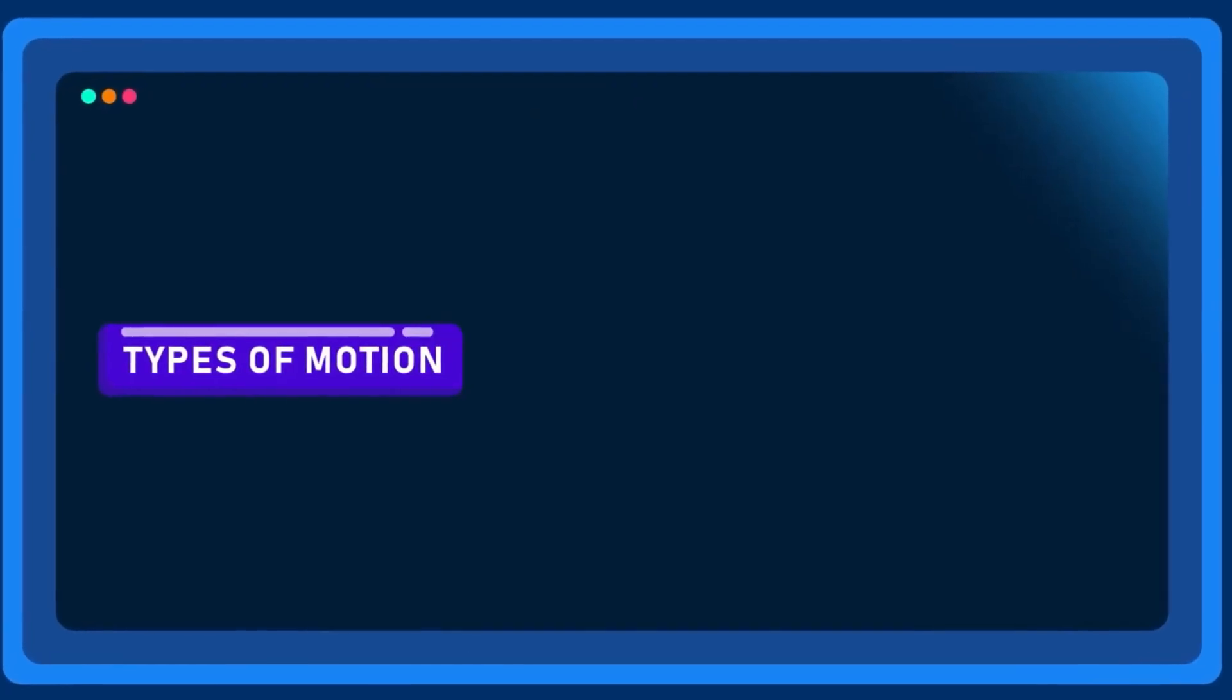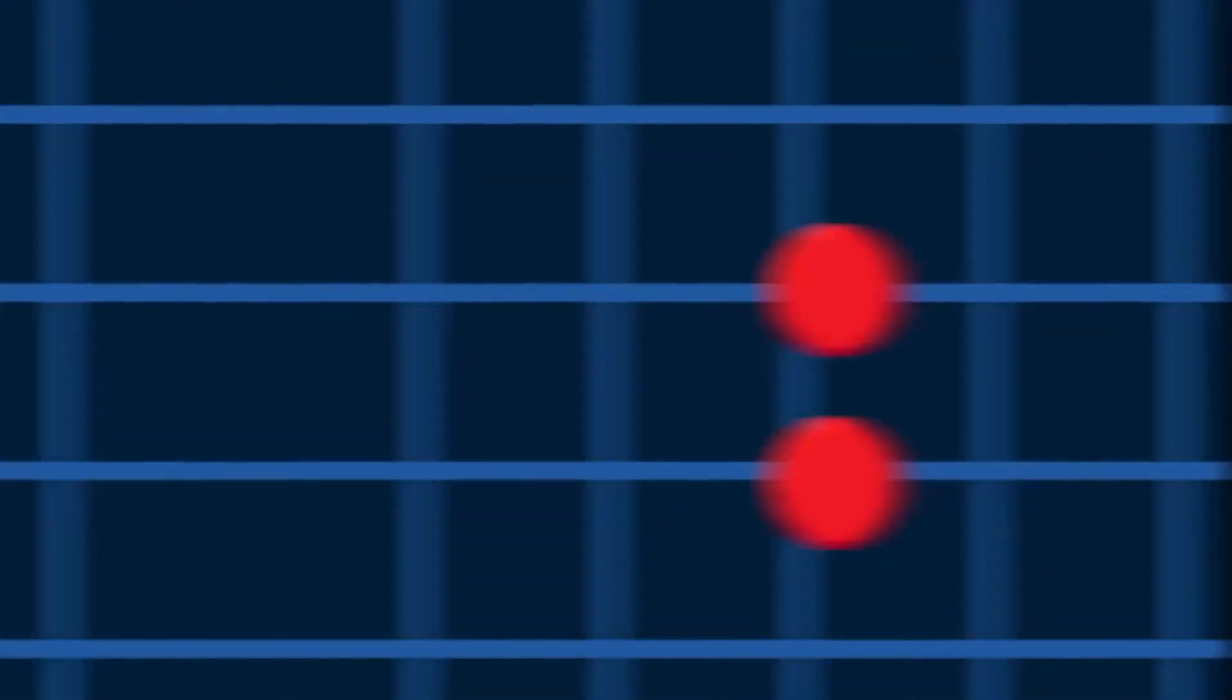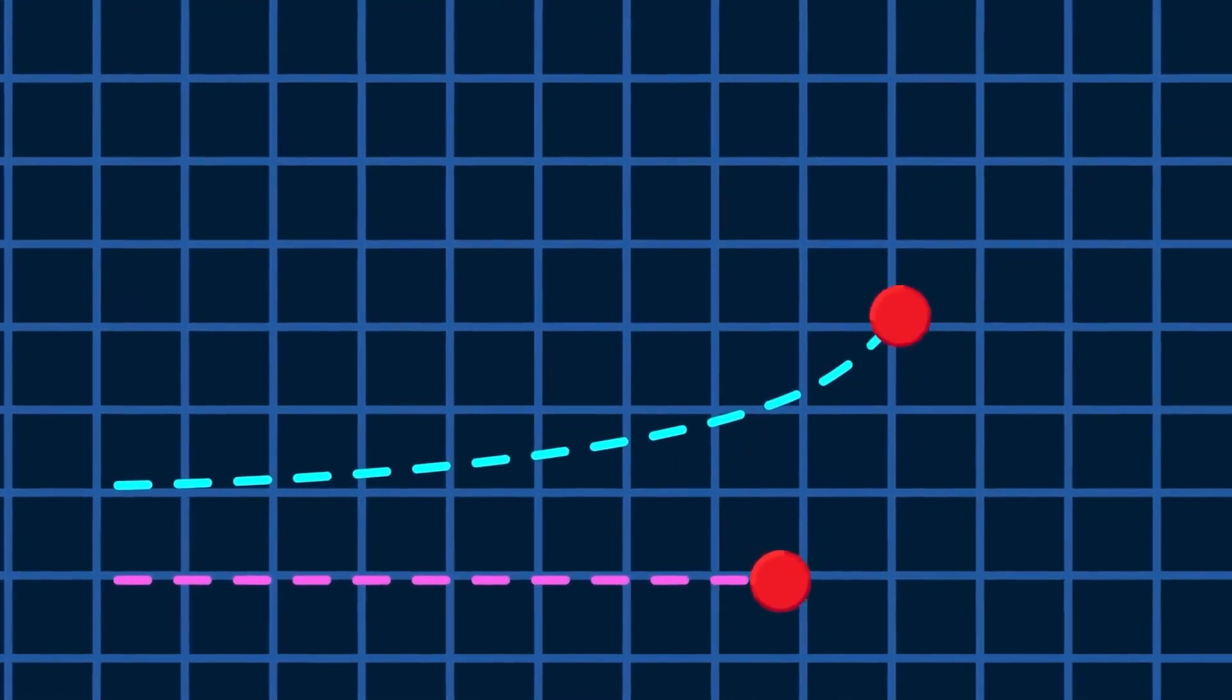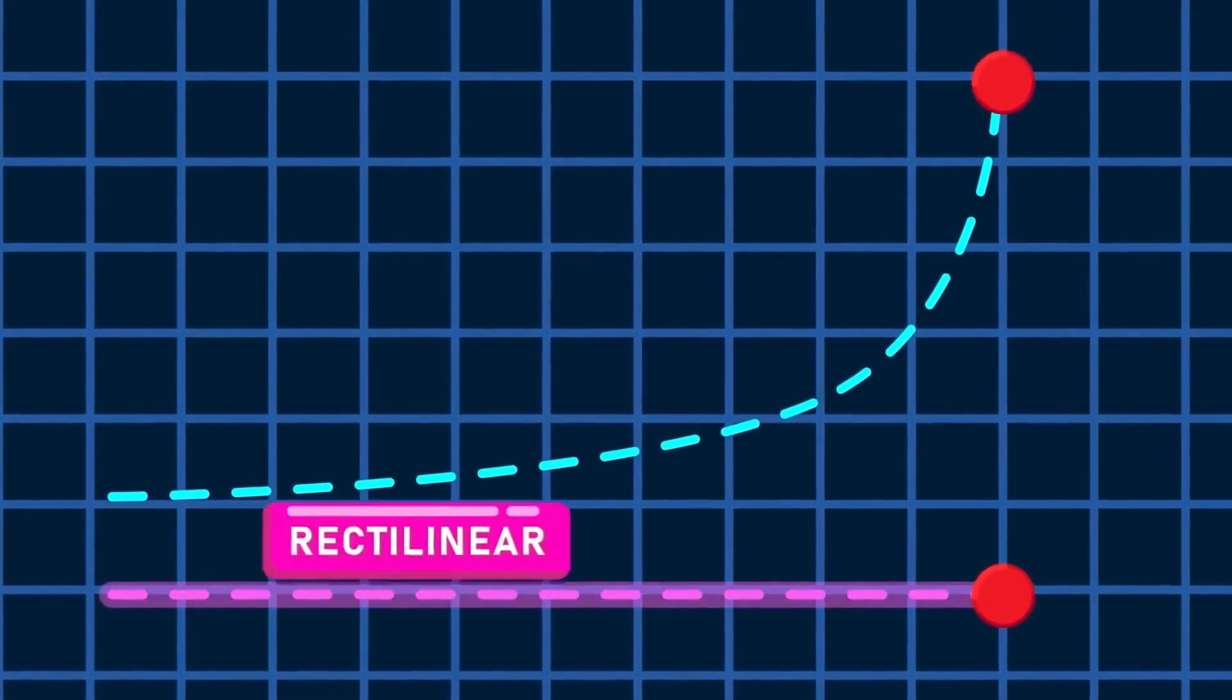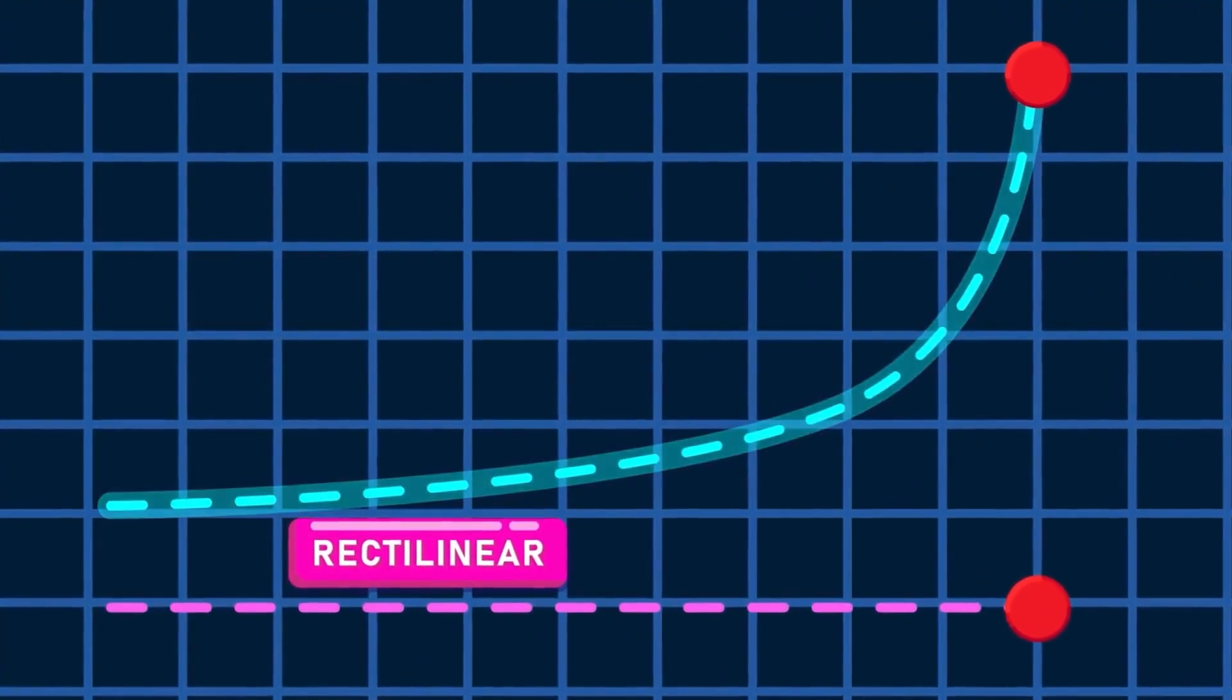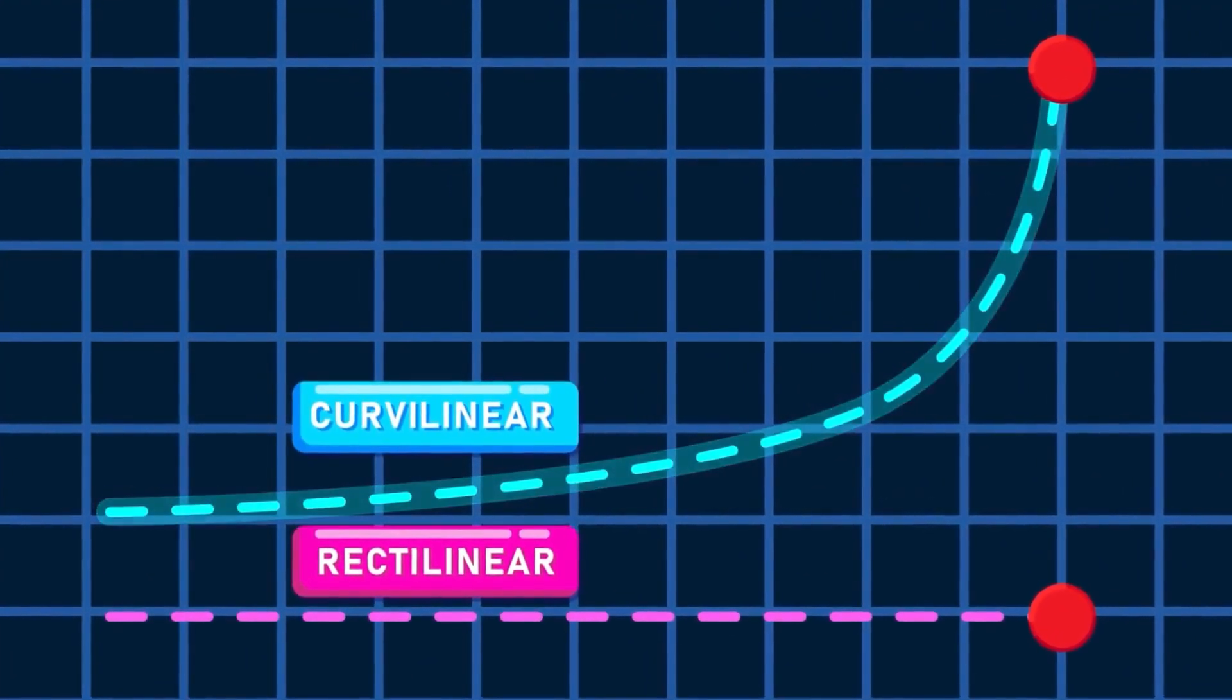Types of motion. Translational motion: The motion of the body where the body moves in a linear path is called translatory motion. The movement can be in a straight line, also called rectilinear motion, or a curved path, also called curvilinear motion.